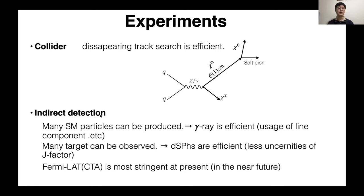And indirect detection observes the standard model particle produced by annihilation of dark matter in the universe. As observed standard model particles, gamma ray is efficient. And as a target in which dark matter annihilates, dwarf spheroidal galaxies are more efficient. And Fermi-LAT and CTA are most stringent at present and in the near future.